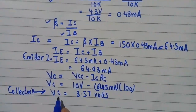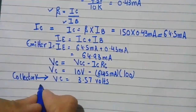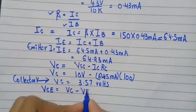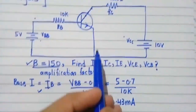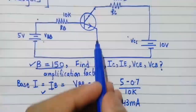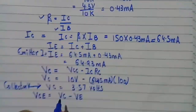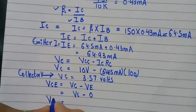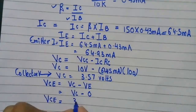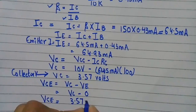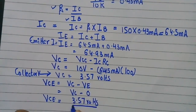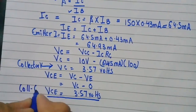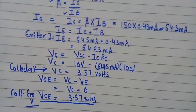Now, Vce = Vc − Ve. Since the emitter branch is common in this transistor, there is no voltage drop there, so Ve = 0. Therefore Vce = Vc − 0 = Vc = 3.57 V. This is the collector-emitter voltage.